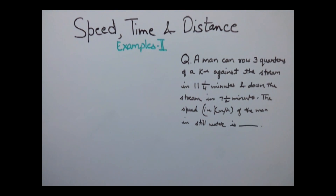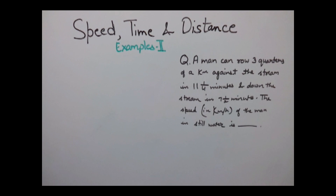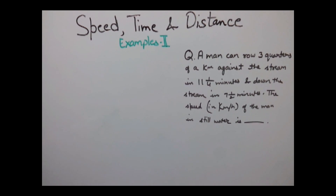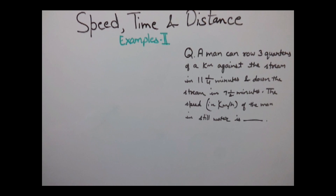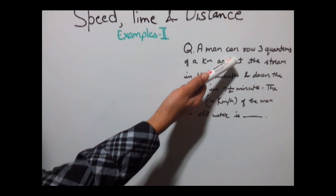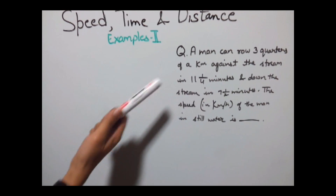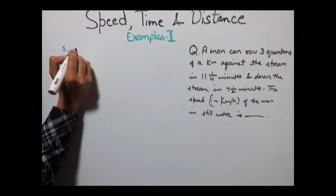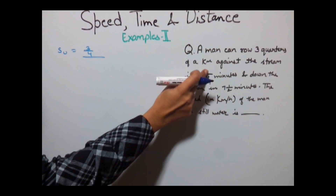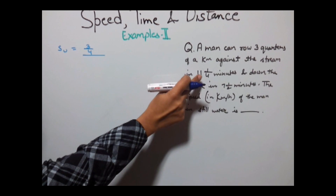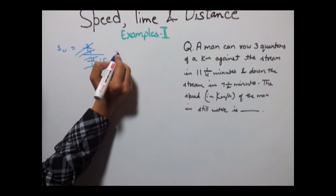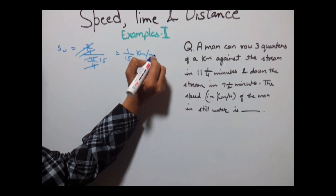The next example is: a man can row three-quarters of a kilometer against the stream in 11 and one-quarter minutes, and downstream in 7 and one-half minutes. Speed of upstream equals (3/4) divided by (45/4) minutes, which gives 1/15 kilometer per minute.